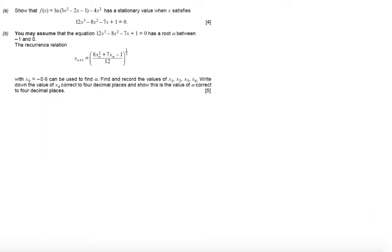So let's look at part b. It says you may assume the equation has a root alpha that lies between minus 1 and 0. We are given the recurrence relation and with x0 equals minus 0.6 we can find the root alpha. So we want to show first of all x1 equals and find x1, x2, x3, x4 all correct to four decimal places and then show that x4 is the correct value for four decimal places.